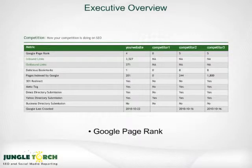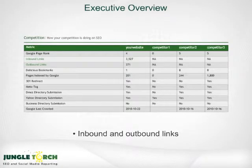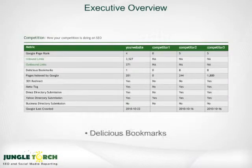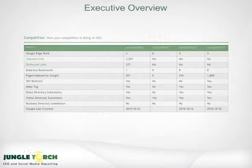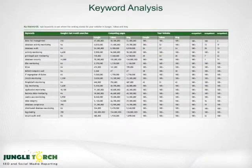Jungle Torch tracks Google page rank, inbound and outbound links, delicious bookmarks, pages indexed in Google, directory submissions, and more. Knowing where you rank for certain keywords and phrases is extremely important in managing your SEO program.